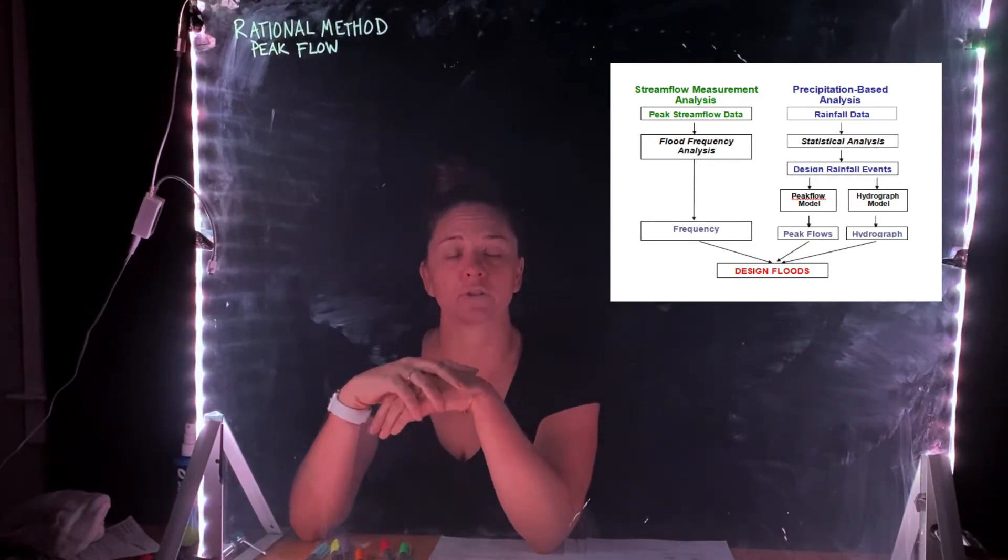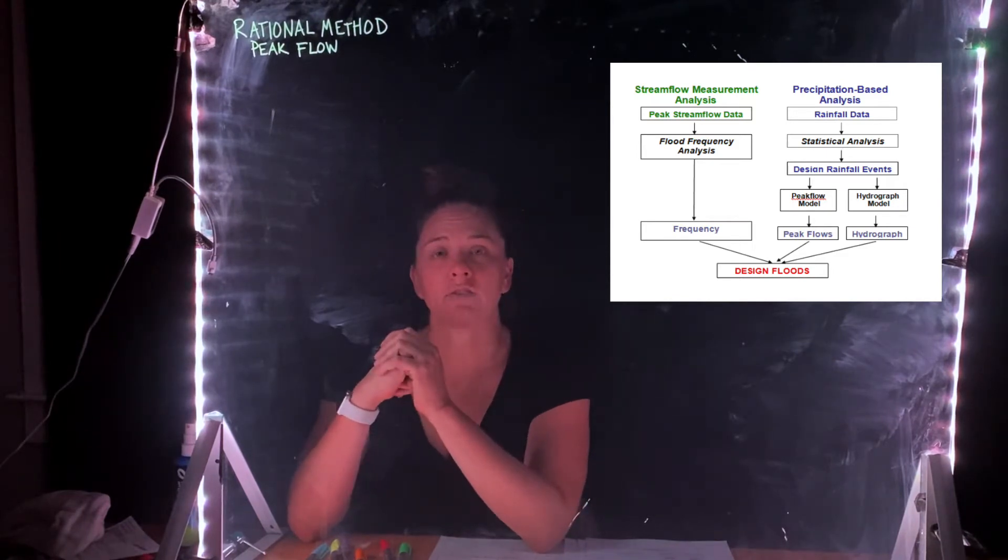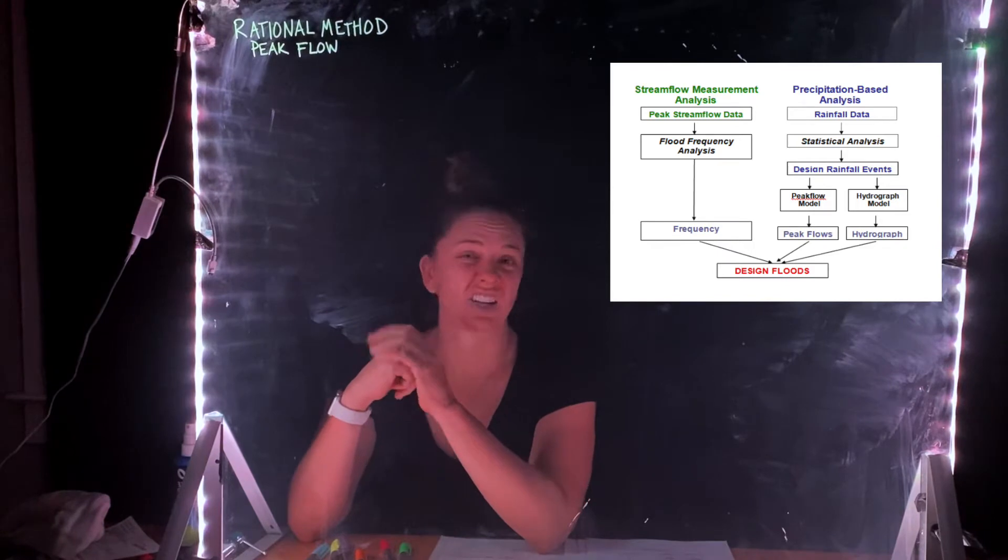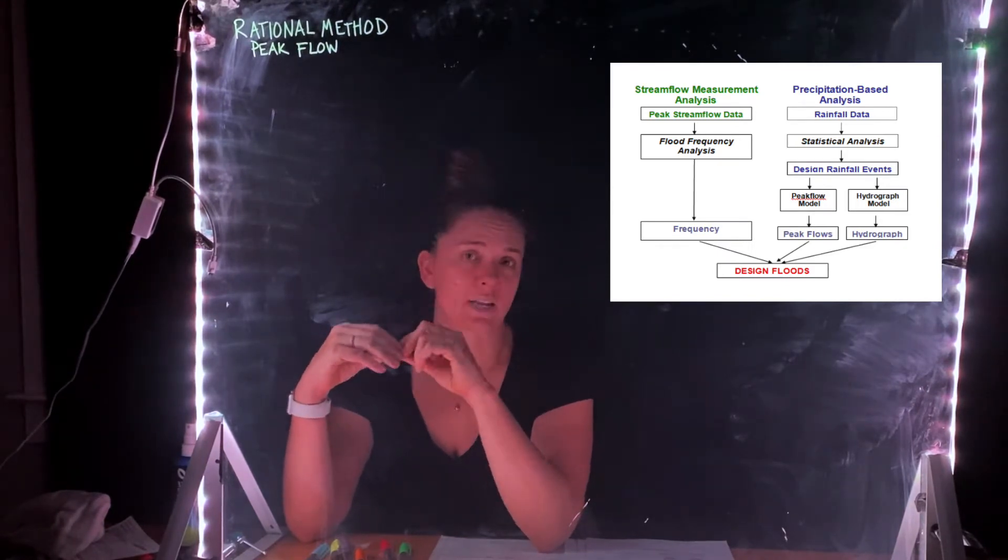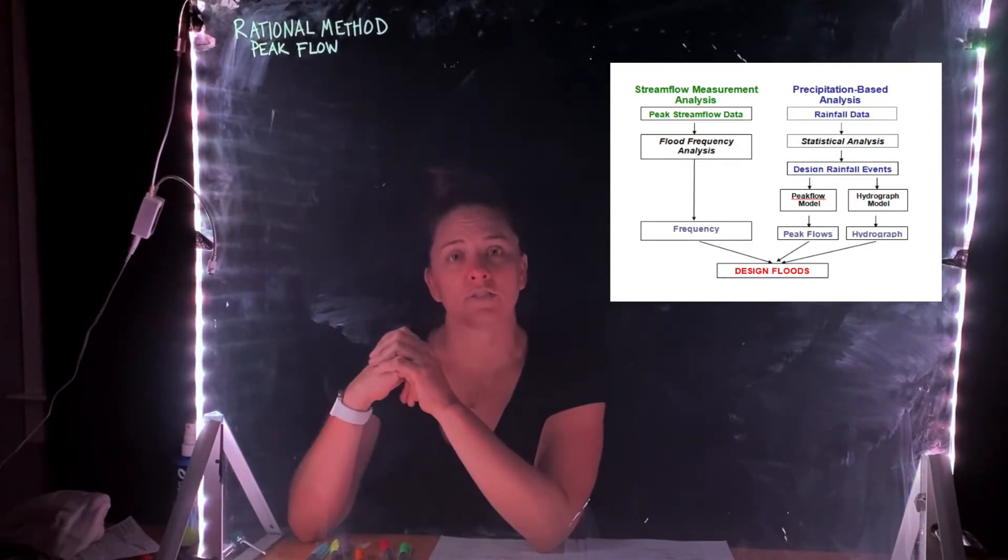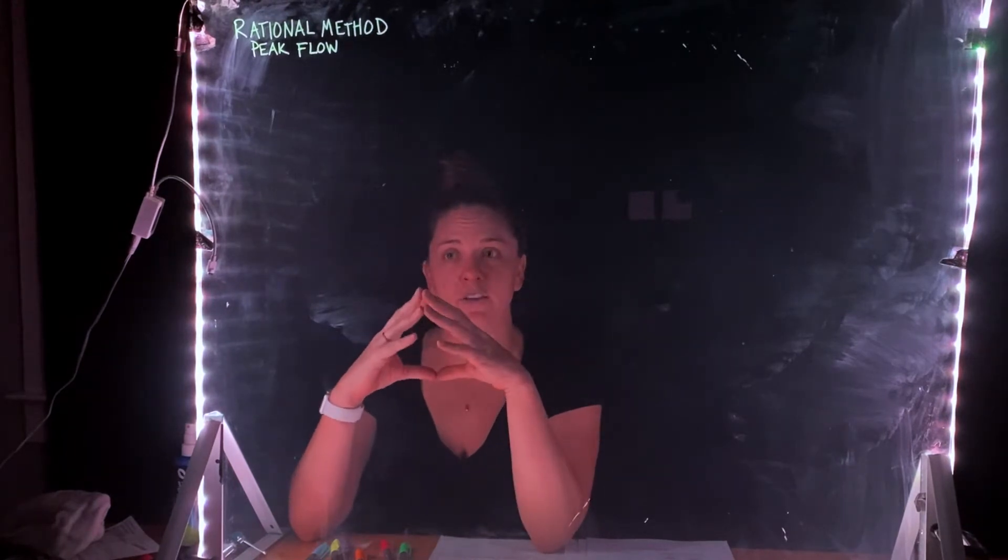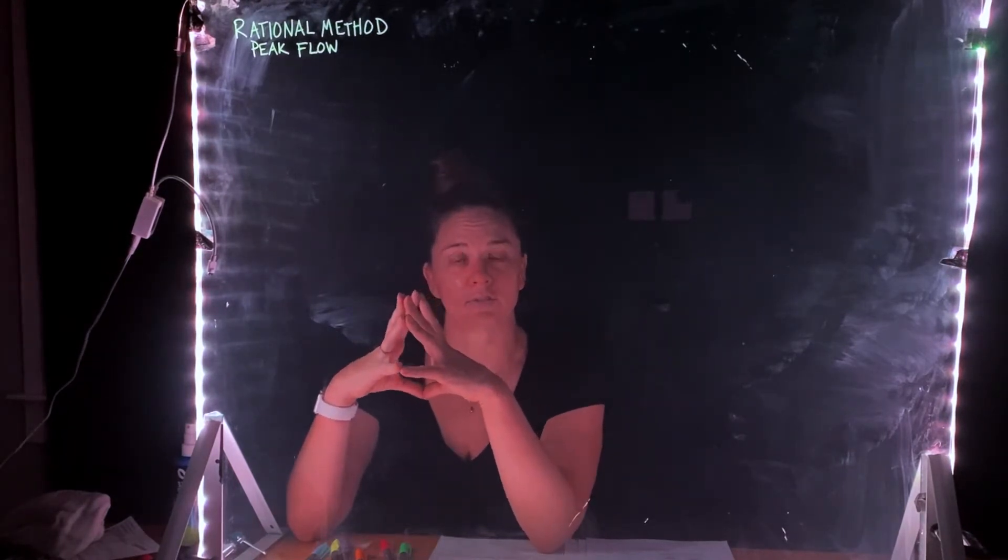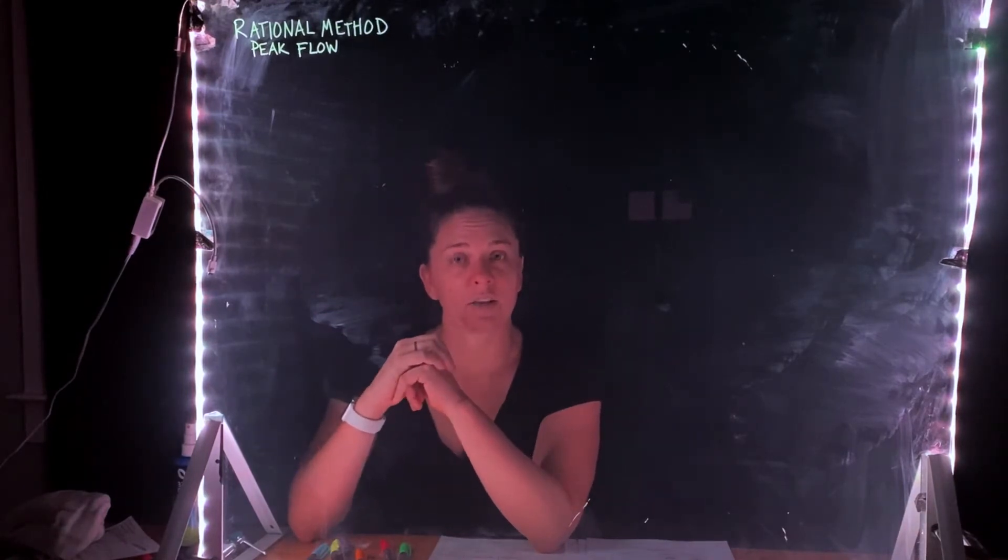In particular, we're going to start with determining that peak flow of the hydrograph using the rational method, and then we'll move on to determining not just the peak flow, but how long from the time it starts raining until that peak flow occurs. So the time to peak. That's where we've been and where we're heading. We're still just talking about hydrographs and using them to help us think about flood flows and any type of infrastructure that we need to consider as water resource engineers.